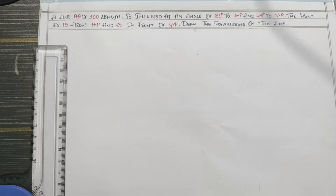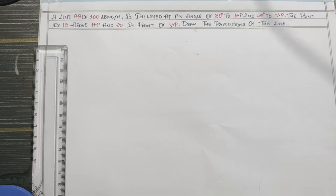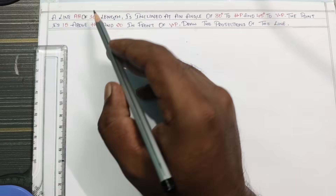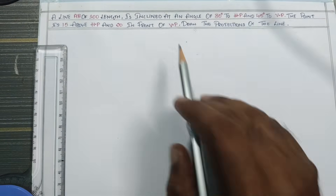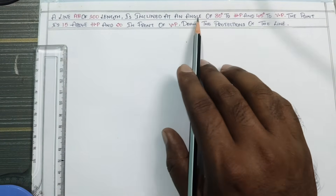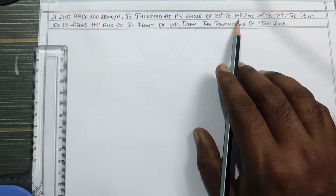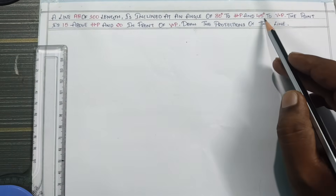The point A is 50mm above HP and 20mm in front of VP. Draw the projection of the lines. AB length is 100. We have a line at 30 degrees to HP and 45 degrees to VP.